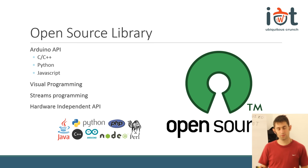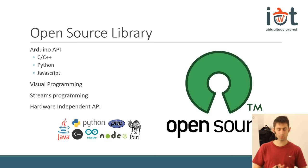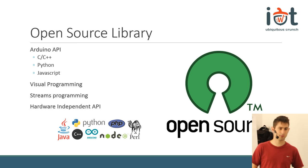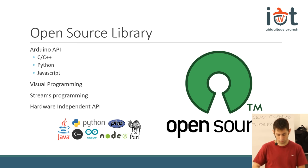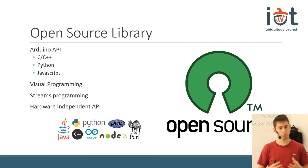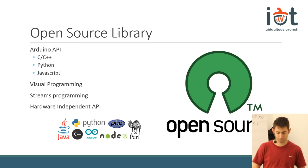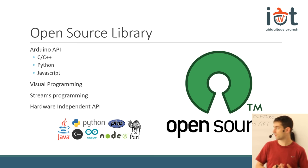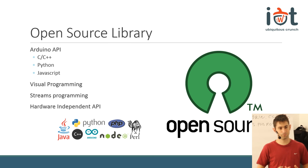A big issue we faced in programming embedded boards is that there is no standard library to access the pins. For microcontrollers, Arduino made it the de facto standard — if you used Arduino, you probably know digital read, digital write, analog read, analog write. These were not available for embedded boards. So what we did was clone the Arduino library for embedded boards. If you know how to program an Arduino, you should be able to get started with embedded systems. We also made it available in Python and JavaScript, and we added a visual programming language and a streams programming language.